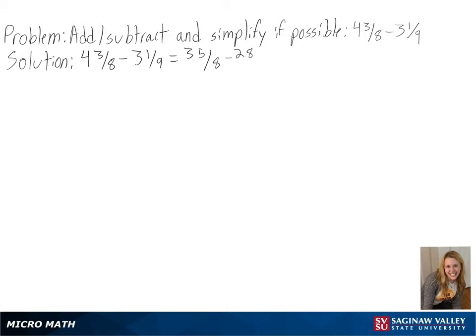Converting these, we get 35 over 8 minus 28 over 9. In this case, our common denominator is 72, so we are multiplying the first fraction by 9 over 9 and the second fraction by 8 over 8.